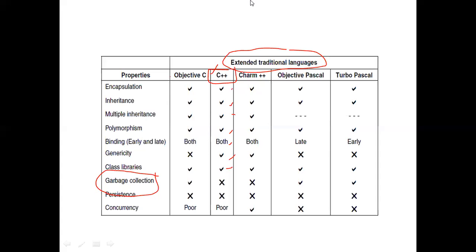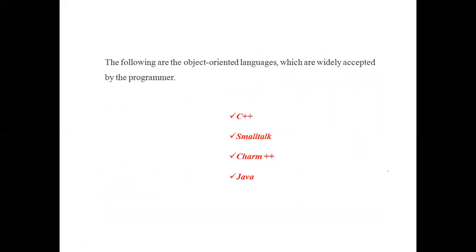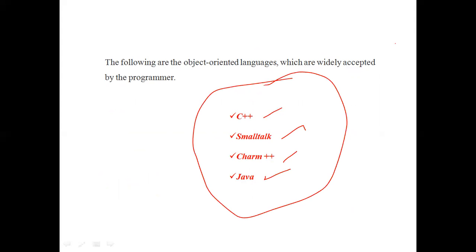Briefly, all these are object-oriented languages. The following are the object-oriented languages widely accepted by programmers: C++, Smalltalk, and Java. These are pure object-oriented languages. We don't have an example of C++ as a pure object-oriented language in that category, since it belongs to extended traditional languages.